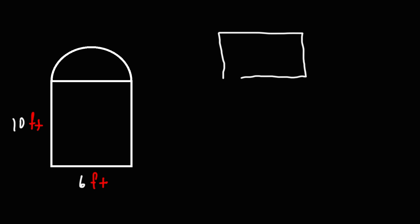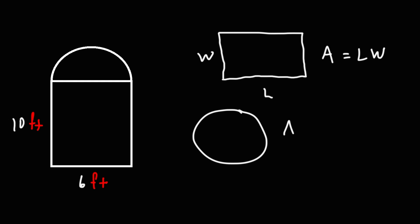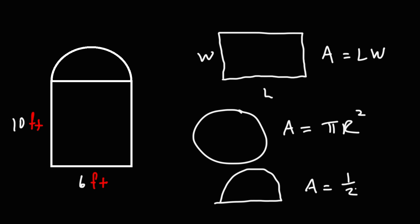If you have a rectangle with length L and width W, the area of the rectangle is simply length times width. For a circle, the area is pi r squared. For a semicircle, the area is going to be half of that, so it's one-half pi r squared.